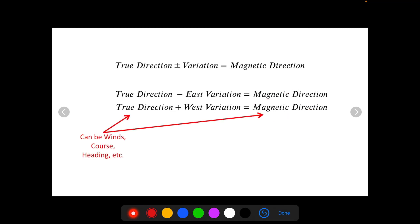And I mentioned this before, we're doing this with course, that example was with course. So this direction was course here. And then we got a magnetic course here. But this could have also been done with heading. And it could also be done with winds.